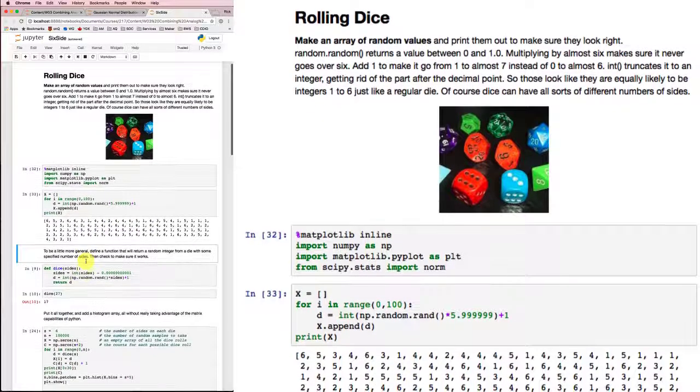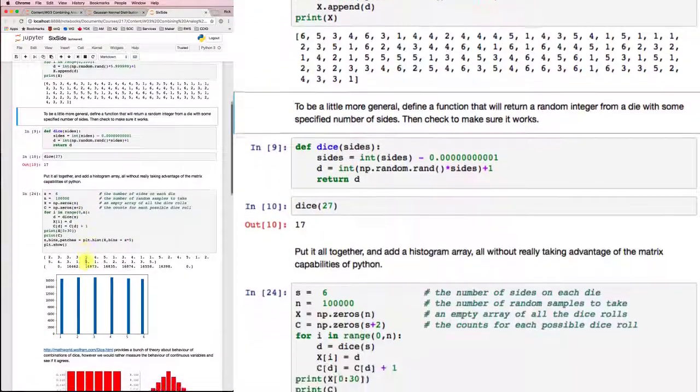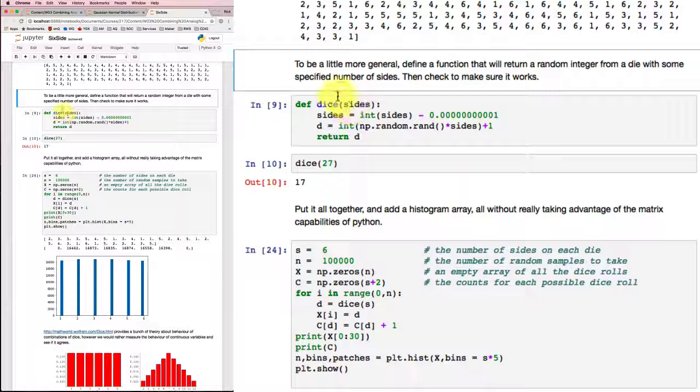Now, to provide a little more general possibility, I'm going to define a function here called dice and it'll take the argument sides. I'm going to multiply it times sides. I'm going to make it just a tiny bit smaller than the round number that I gave it, the 5.99 times the random number plus 1, except that sides can now be a variable.